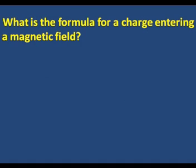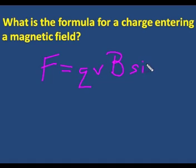What is the formula for a charge entering a magnetic field? What is the force on it? F equals QVB. The charge, the velocity, the B field in Tesla. And if it enters at an angle, you want the vertical component, so you want sine theta.